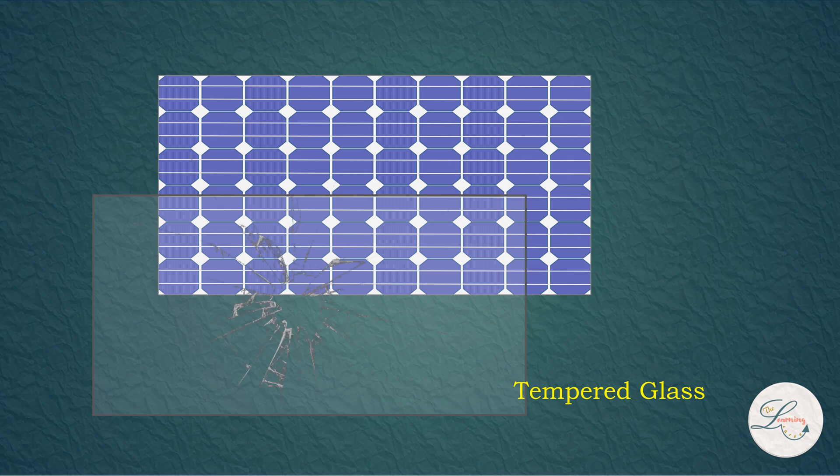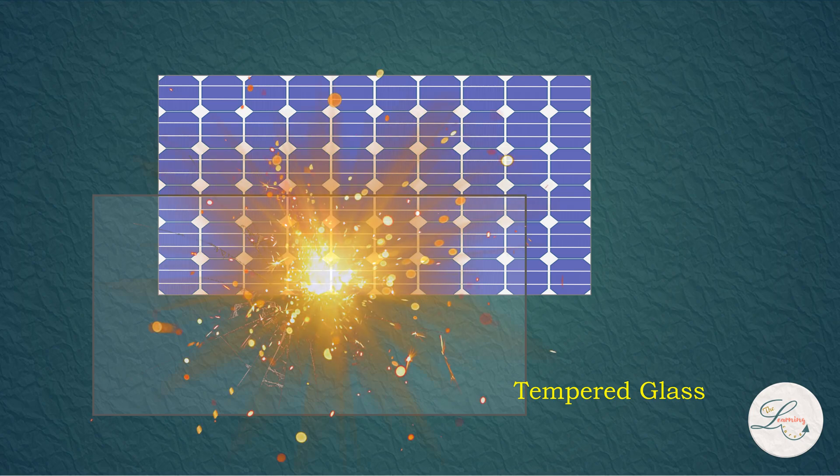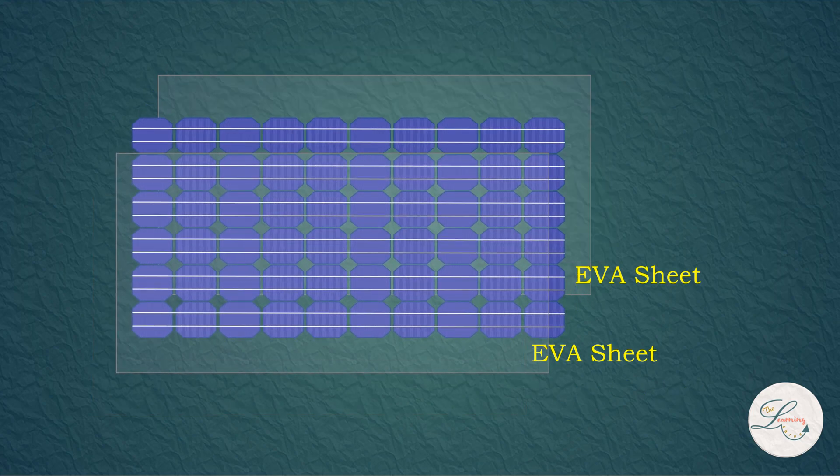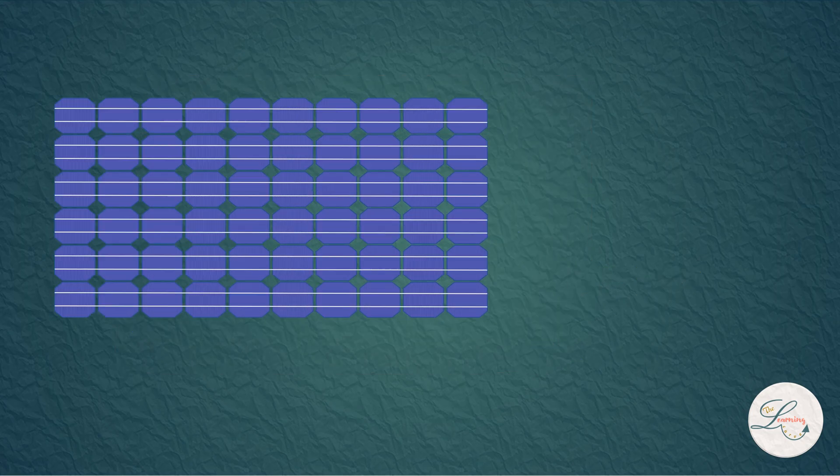...it can allow the water to penetrate and it leads to fire hazards. It also has an anti-reflective coating on the rear side to reduce the losses and to improve the light transmission. EVA films are the key material used for the solar panel lamination. It prevents the moisture and dirt to enter the solar cells. The complete energy conversion is done in the solar cells.